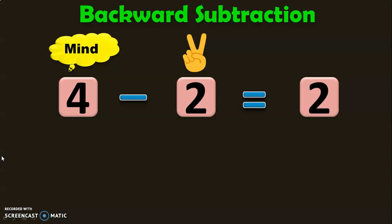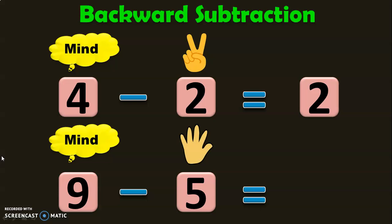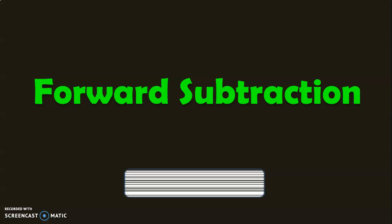Let us look at another example. 9 minus 5. 9 in the mind, 5 in the fingers. Before 9, 8, 7, 6, 5, 4. So this is the usual way that we do subtraction.